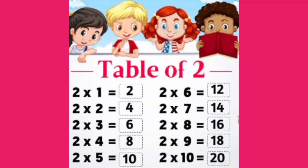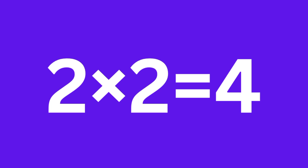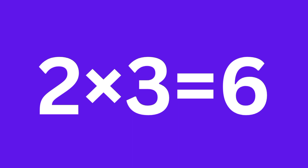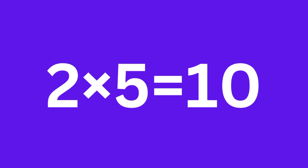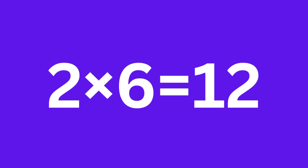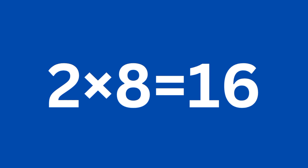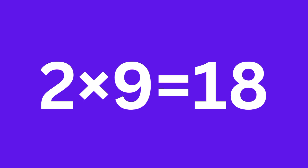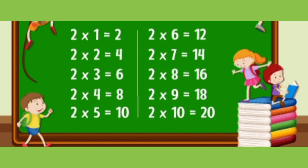Table of 2. 2 ones are 2. 2 twos are 4. 2 threes are 6. 2 fours are 8. 2 fives are 10. 2 sixes are 12. 2 sevens are 14. 2 eights are 16. 2 nines are 18. 2 tens are 20.